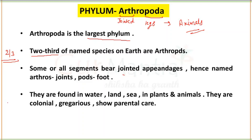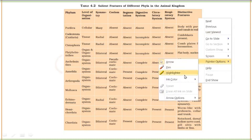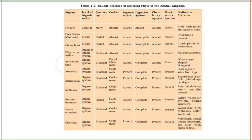If we talk about habitat, they are found in water, land, sea, in plants, and in animals. They are found in colonies, show gregarious nature, and parental care. The basic features: level of organization is organ system, symmetry is bilateral, they are coelomate with coelom present, segmentation present, and digestive, circulatory, and respiratory systems are all present.